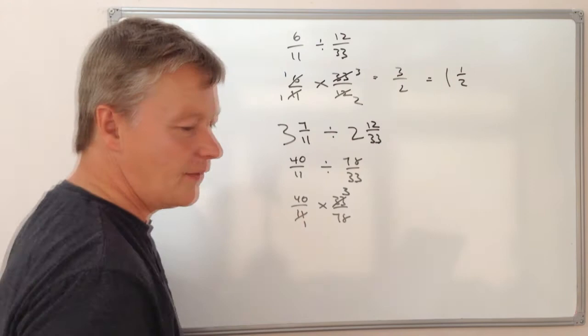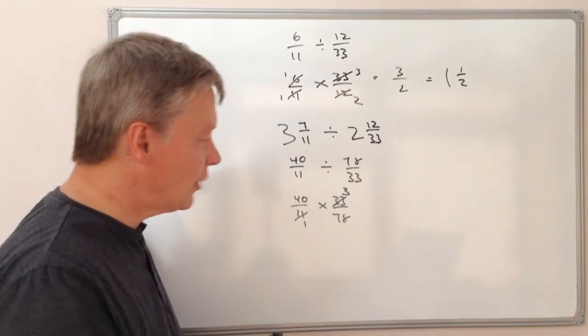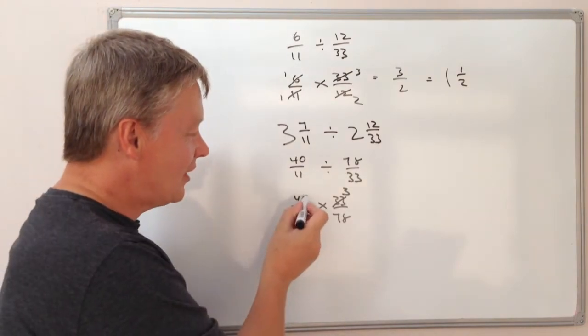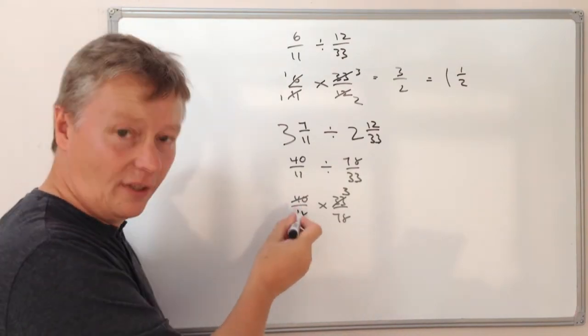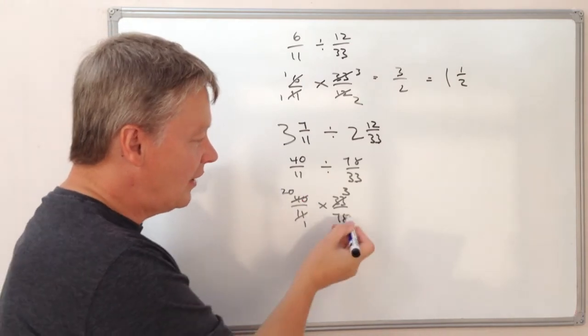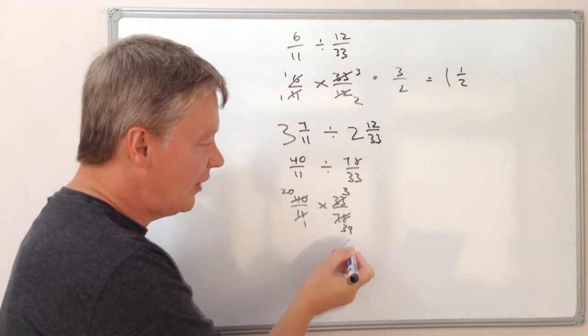Then I've got 40 and 78. I don't really like 78, it's a big number to deal with. But what I can do at least is I can reduce this by 2. So if I divide that by 2 I get 20, if I divide that by 2 I get 39.